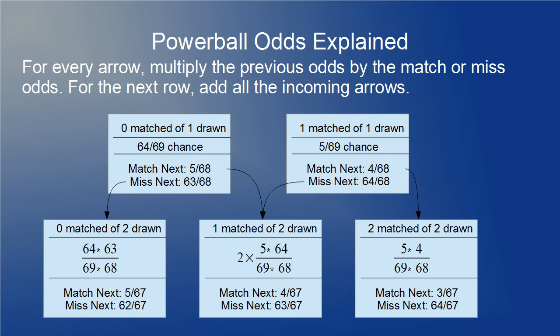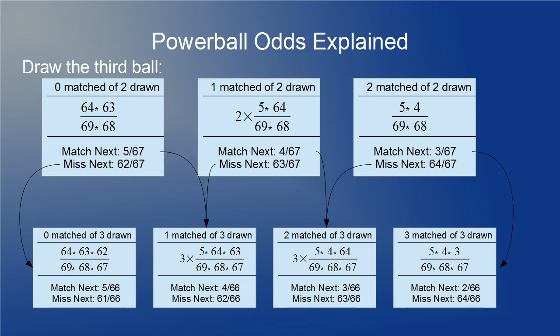The next step gets a little more complicated. For every arrow, we multiply the previous odds by the match or miss odds, and then add all the incoming arrows. That's the multiplication principle followed by the addition principle. This guarantees that all of the probabilities sum to 1, which is expected, because they cover all of the possibilities for the number of balls matched at that stage, from 0 matches on up to the number of balls drawn so far.